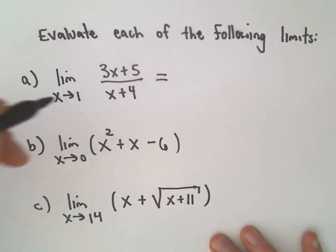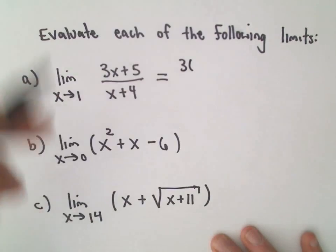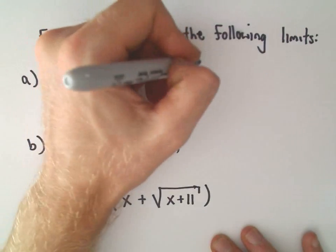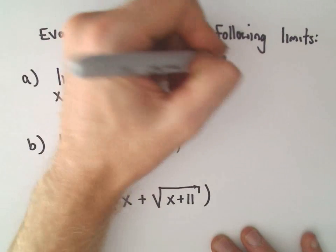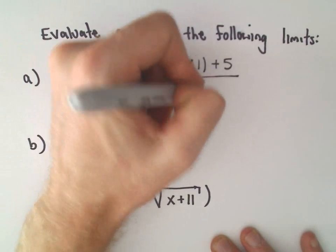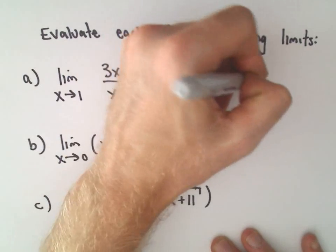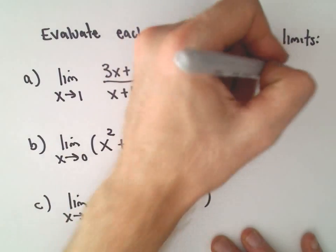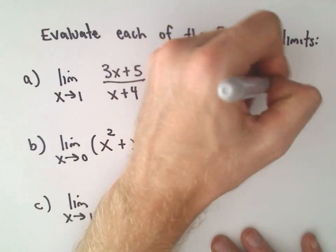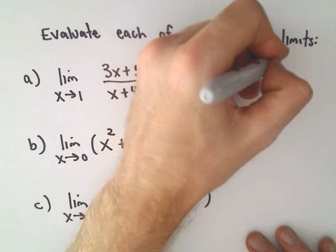To evaluate this limit, all we have to do is simply plug in x equals 1 everywhere that we have an x. So we would get 3 times 1 plus 5 over 1 plus 4. That's going to be 3 plus 5 or 8 over 5, and that would be the answer to our limit.